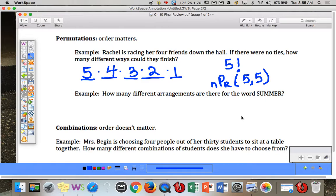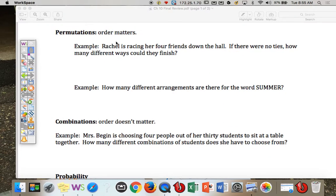Here's another example. How many different arrangements are there for the word summer? So first we count how many letters in summer. One, two, three, four, five, six. But there is repetition. The M's, there's two M's, so we have to divide out that repetition. So we have six factorial over two factorial. If there's more than one factorial on the bottom, just make sure you put it in parentheses. So that's when order does matter.